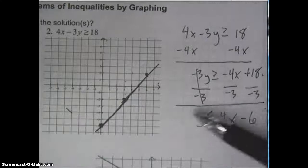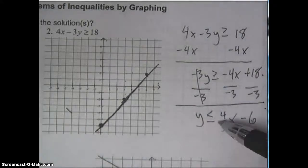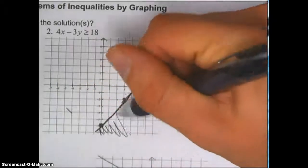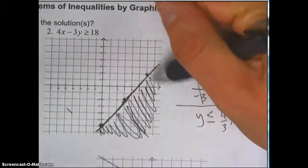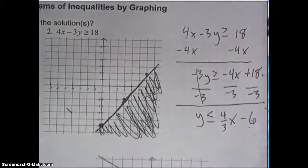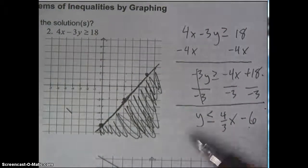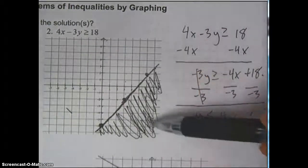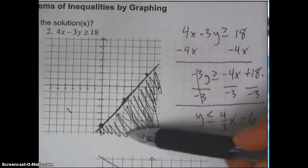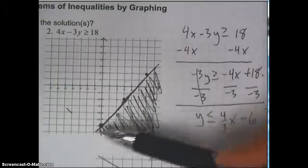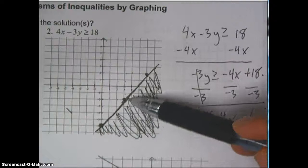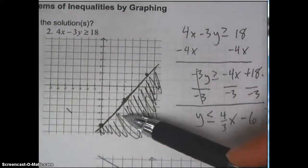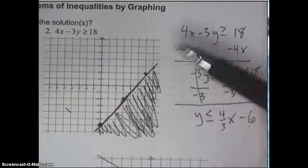Last part — it says where do I shade the area? Less than. Less than means the area below. The last part of this question was: what are the solutions? Well, the solutions are every single point inside of this shaded area, including the line. So all these points on the line are included in the solution.